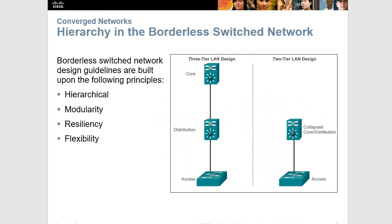Here again we have some review — the hierarchy in a borderless switched network. We've seen the core, distribution, and access layers in CCNA1. Each layer performs a specific function: you've got your end users and switches at the access layer, routers that may be less powerful at the distribution layer, and then more powerful routers at the core that send traffic to different regions. You can also take those two and combine them into a collapsed core. These symbols are actually Layer 3 switches, which you'll see a little later in the materials, but they could be routers or Layer 3 switches — Layer 3 switches do perform routing functions.